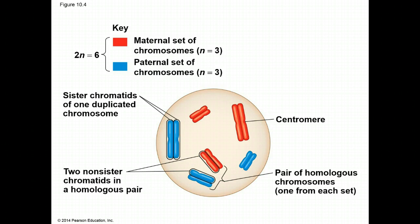During meiosis 1, this number will go from 6 to 3 chromosomes. And then during meiosis 2, the remaining chromosomes will be separated so that there are no longer any chromatids.